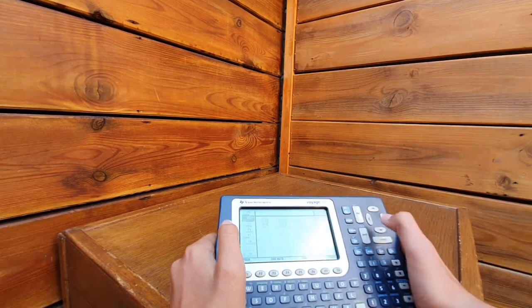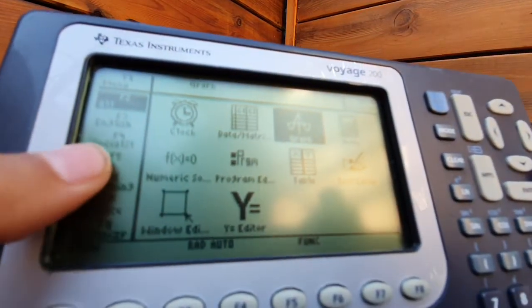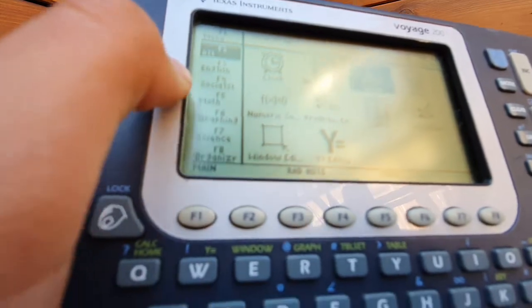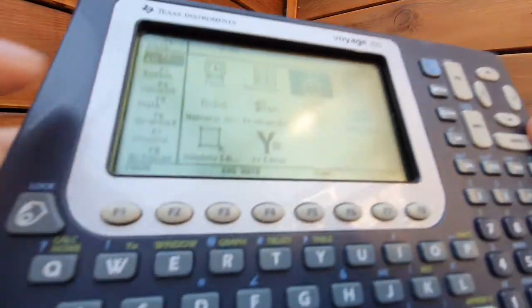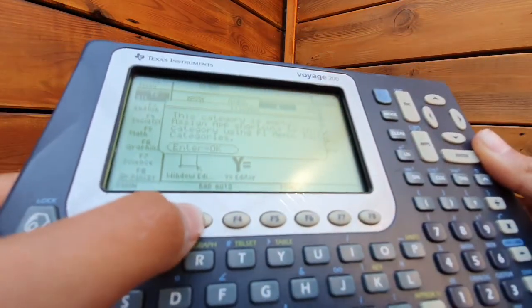If we go to the apps it will show like English, socialist, math, graphic, science, and you can see I can just type here. There's categories.